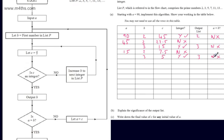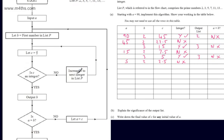We let A equal to C — C is 5, so A becomes 5. We go back up and let B be equal to the first number in the list, which is 2. We let C be equal to A divided by B — 5 divided by 2 is 2.5. Is C an integer? No, 2.5 is not. So we increase B to the next integer in list P, which is 3.